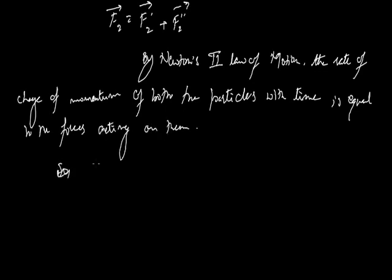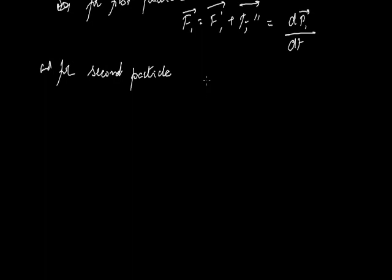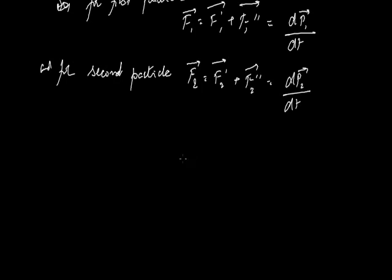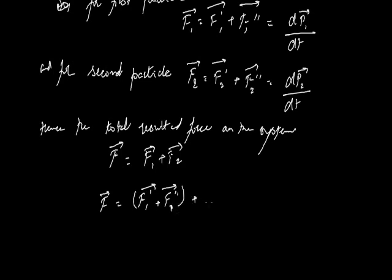For the first particle, we have F1 equal to the sum of external force plus internal force. And for the second particle, it is the sum of external forces and internal forces acting on it, equal to the rate of change of momentum of M2. Hence, the total resultant force on the system F equals F1 external plus F1 internal plus F2 external plus F2 internal, which equals the rate of change of momentum of the first particle plus the second particle.